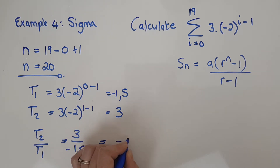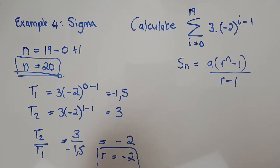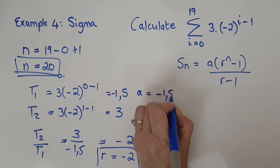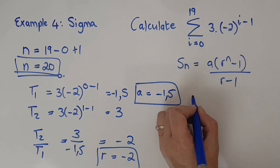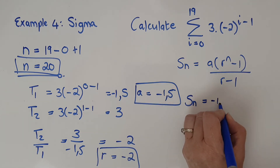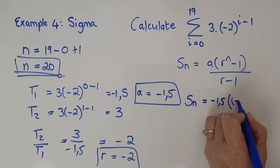That gives me r equals negative 2. I'll put a box around n and a box around r. I've also got a — my a is negative 1.5. So I have n, a, and r, and I want Sn — I do have enough. Let's substitute in. Sn is going to be a, which is negative 1.5, times open bracket r to the power of n minus 1 — adding extra brackets when using the calculator.